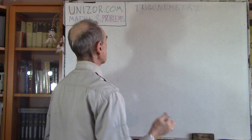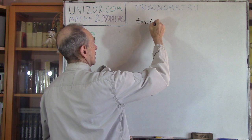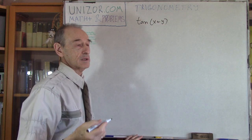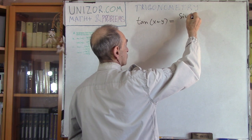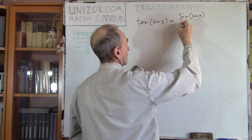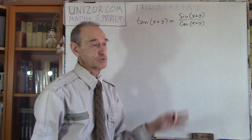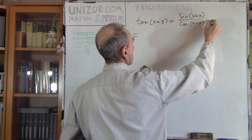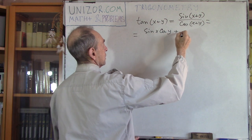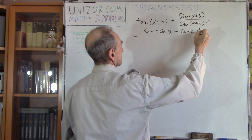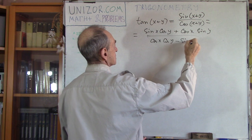Next on the agenda is tangent and cotangent of a sum. This is actually easy — it's plain manipulation with known facts. Tangent of x plus y equals, by definition, sine divided by cosine — in all those points where cosine is not equal to zero. Using the formulas just derived, that's sine x cosine y plus cosine x sine y, divided by cosine x cosine y minus sine x sine y.